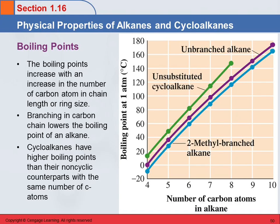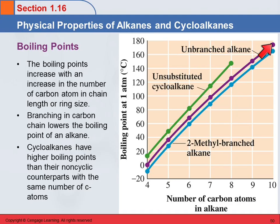Boiling points are interesting. The boiling points increase with the size of the chain. Looking at the purple line — unbranched alkanes — here's four carbons: butane, five carbons: pentane, hexane, heptane, octane, nonane, decane. Their boiling points increase as their size increases, and it's almost a straight line. We love to see trends like that.